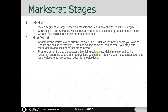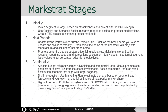Once your product better fits your target segment, use perceptual advertising objectives. Tell your advertising agency not just to create brand awareness, but to convince consumers that your brand has the characteristics they're looking for — for example, the processing power they want. Use the multi-dimensional scaling or semantic scales reports to identify current brand perceptions, the target segment's ideal values, and set those ideal values as your advertising objective so consumers start to see you as fitting their needs.